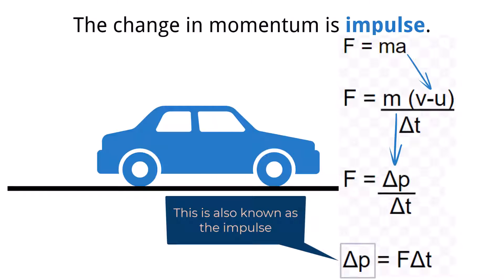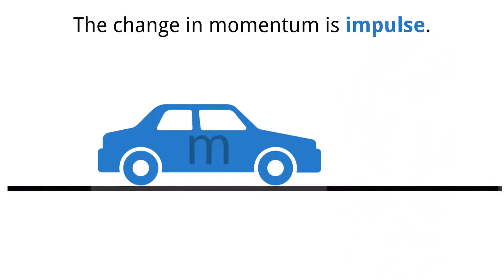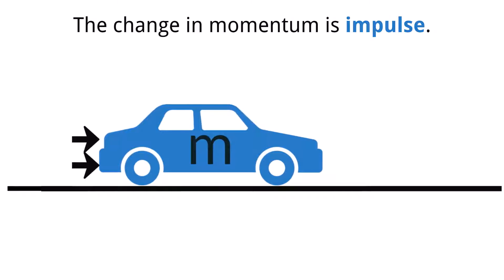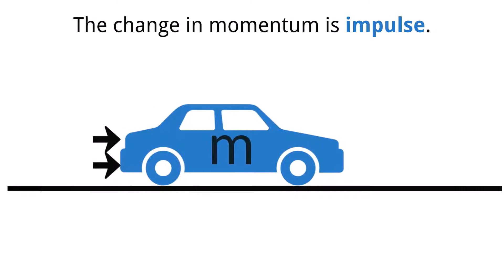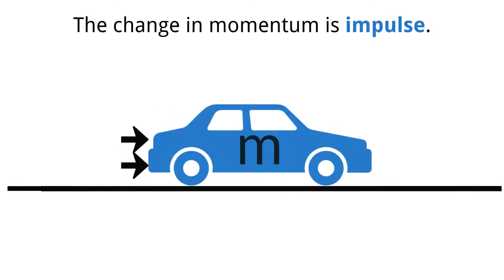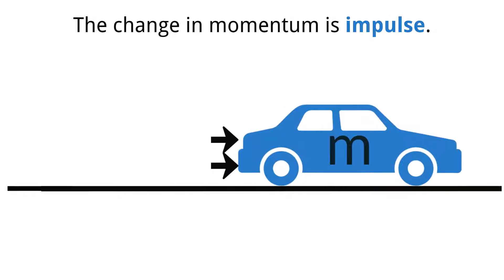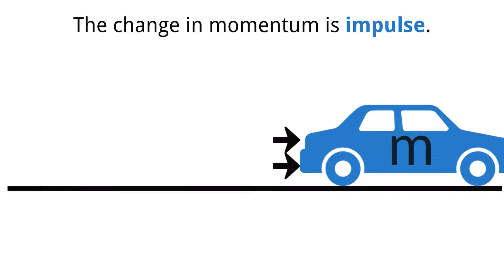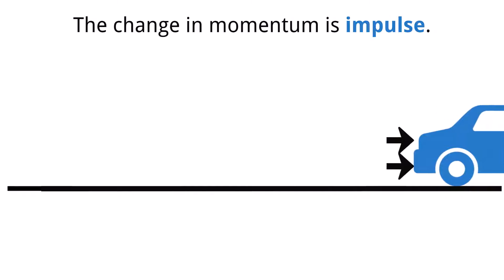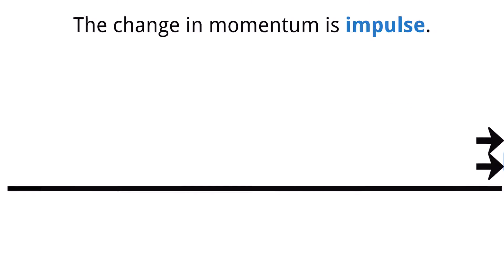This is impulse. Take into consideration when a car breaks down — it must be pushed to a safe location. A car is very massive, and with a force of a few people, it can be accelerated. However, in order to accelerate the car, the force must be applied for a long period of time. This shows the idea of impulse in action. Even though the force from the people may be minimal in comparison to the mass of the vehicle, given enough time, the car will accelerate.